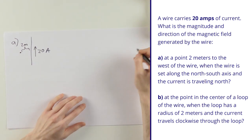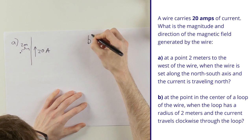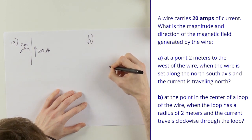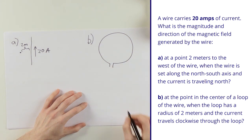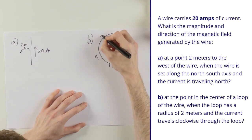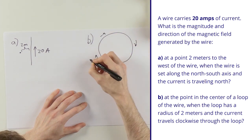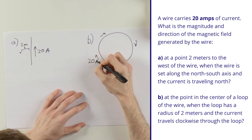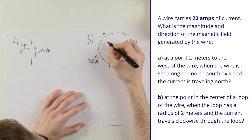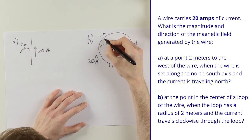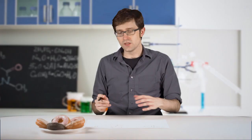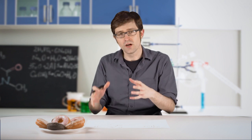Part B is similar in some ways, but the same wire is going around in a loop. It's gonna look like that. The current goes clockwise at again 20 amps, and I need to know the magnitude and direction of the magnetic field two meters away in the center of the loop, radius two meters.